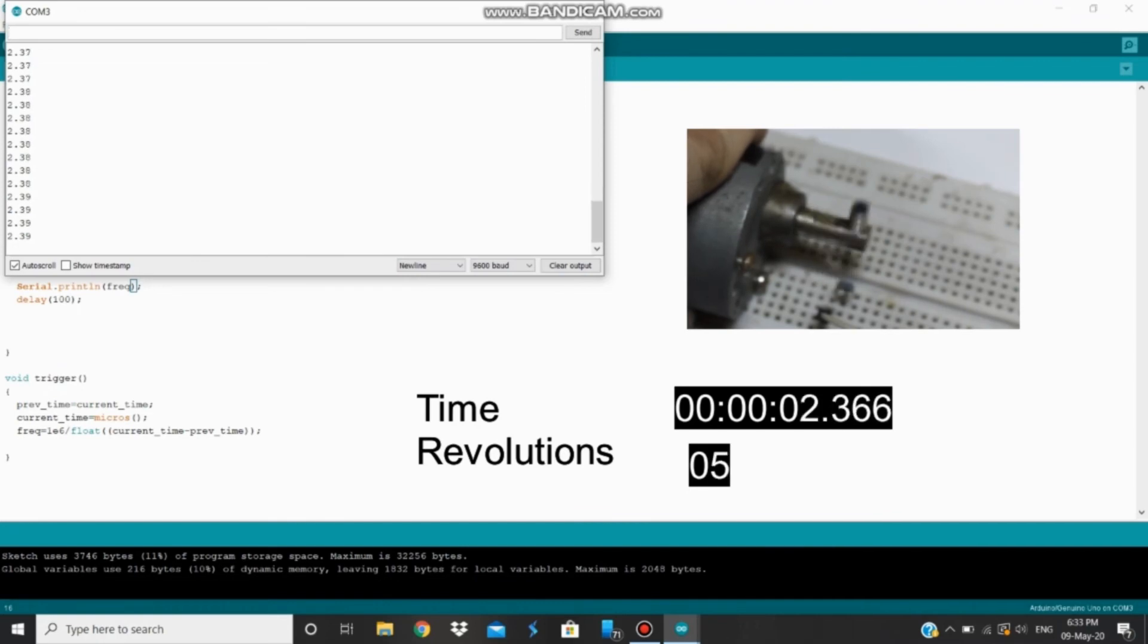Here the computer screen is showing a revolution speed of 2.33 revolutions per second while you can see the actual revolutions on the screen. And here we are with an exact match.